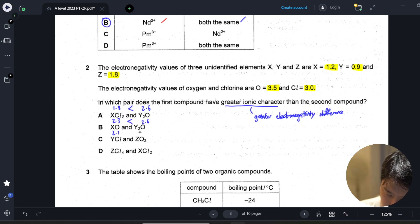Yes, this pair has the first compound have a greater electronegativity difference, which means that it has a greater ionic character. So our answer is C. Just to double check, for D it's 1.2 and 1.8, so it's less than. The only correct answer is C.